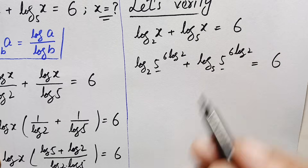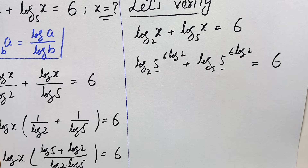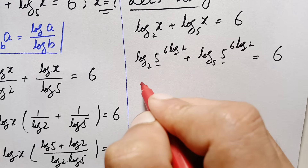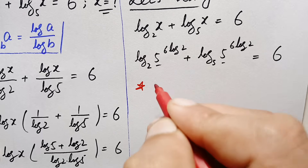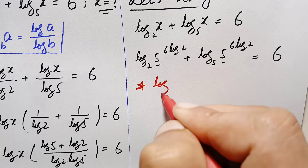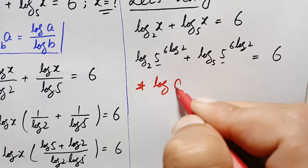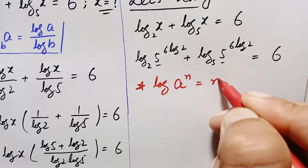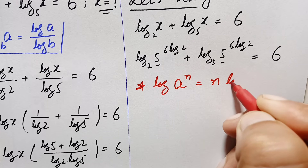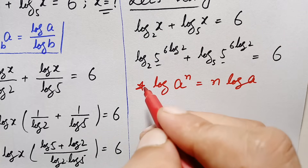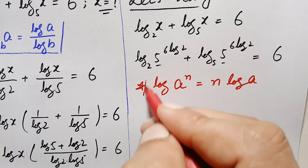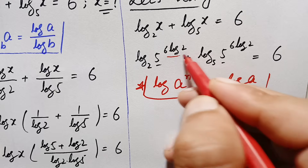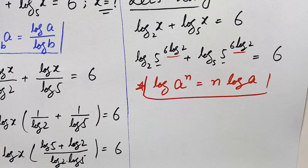Here we will use the logarithm property: log of a raised to power n equals n times log of a. Using this property, we move the powers to the front of each log.